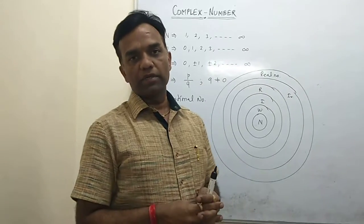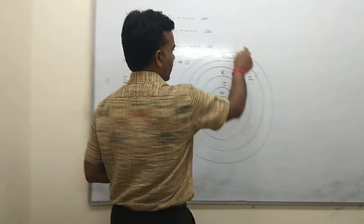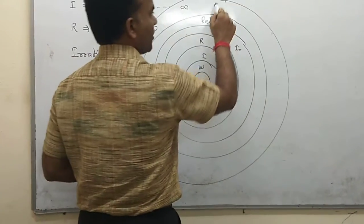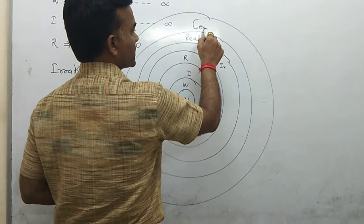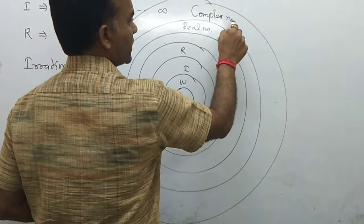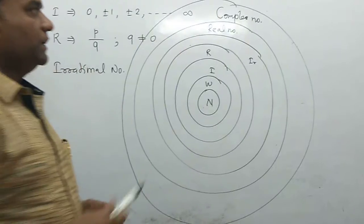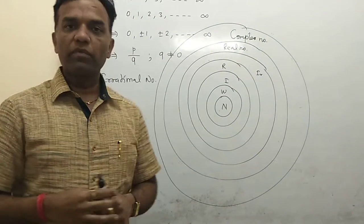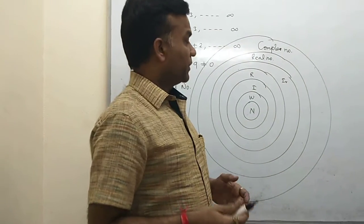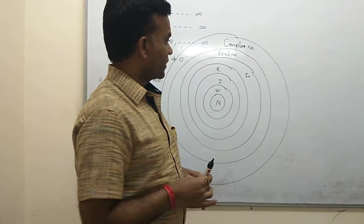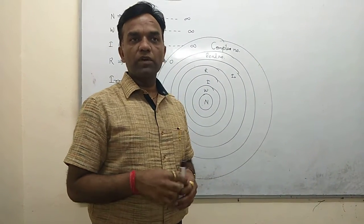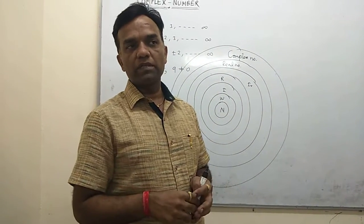Outside this entire group, we draw a circle — completely outside all these real numbers — and that is where the complex number sits. So all the previous numbers are included inside the complex number. First we study the number system so everyone has a basic understanding.